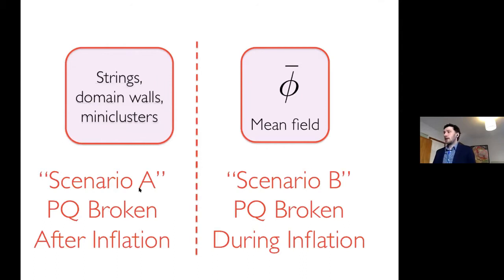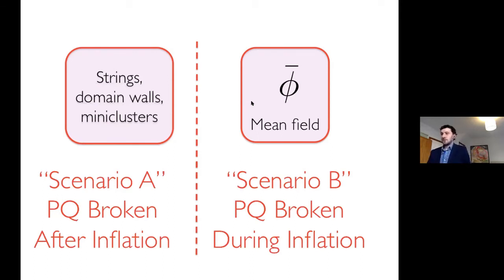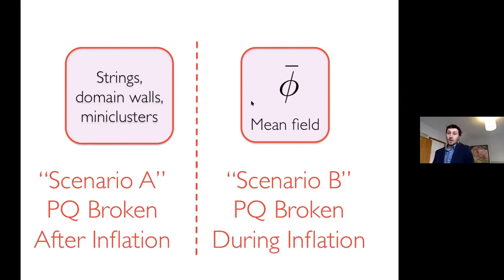I divide this, according to Sikivie's nomenclature, into scenario A and scenario B. Scenario A is when the Peccei-Quinn symmetry is broken after inflation, and scenario B is when it is broken during inflation.